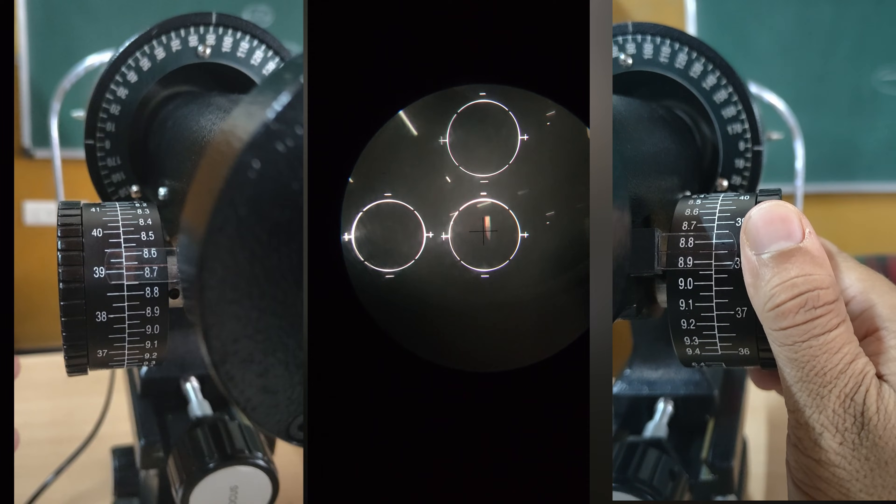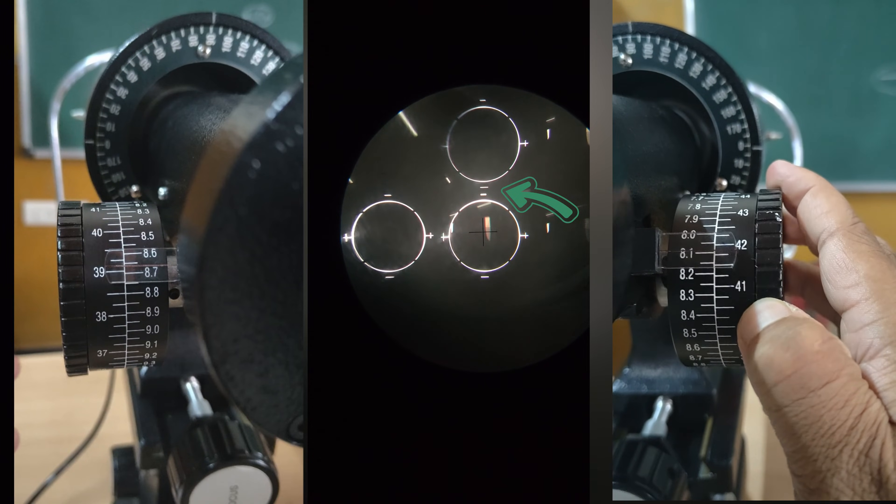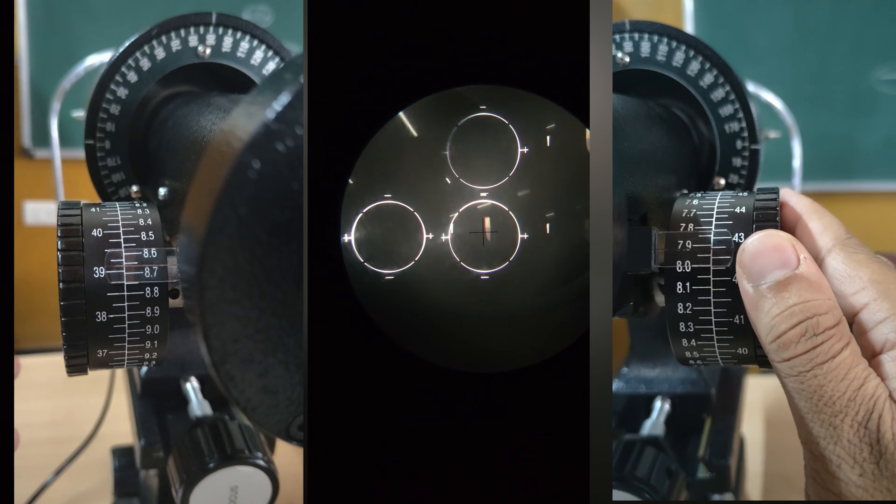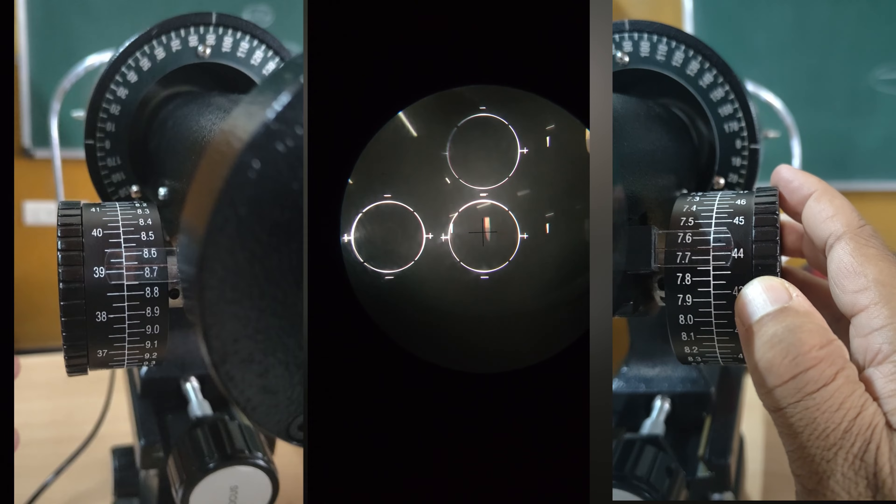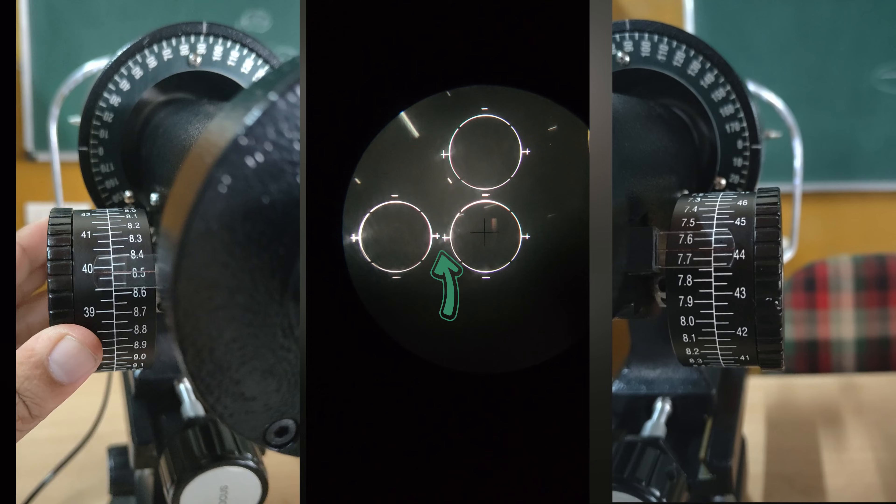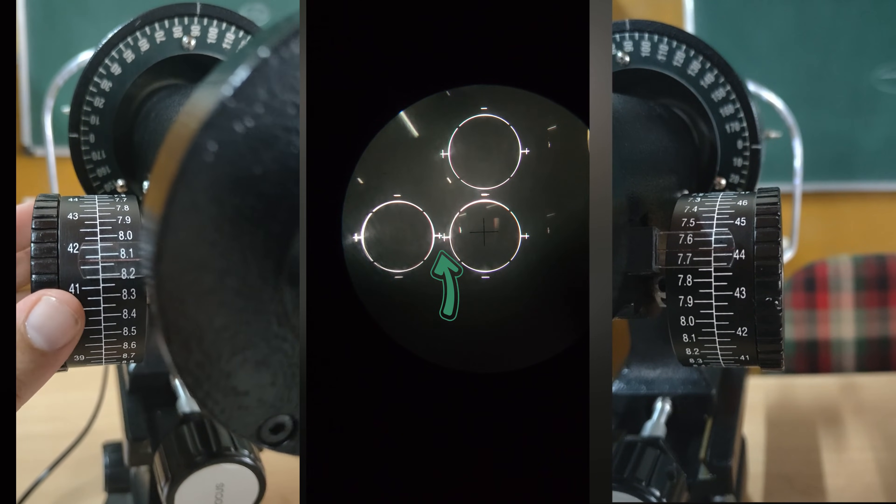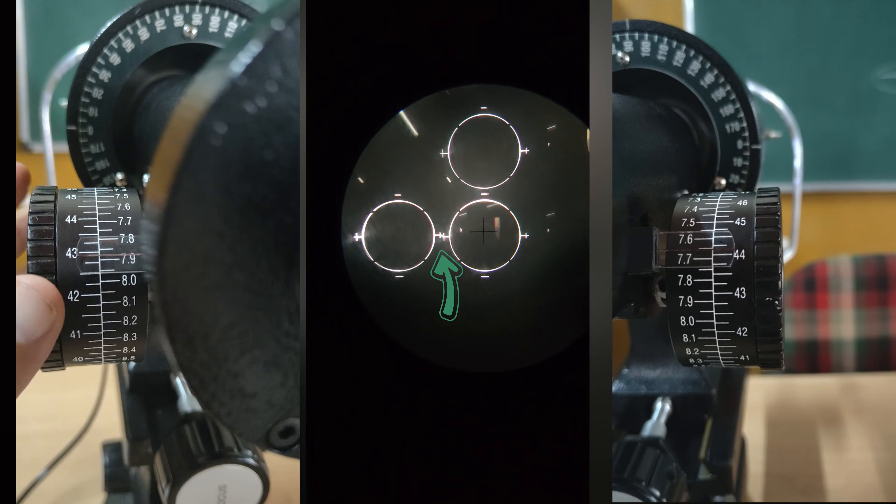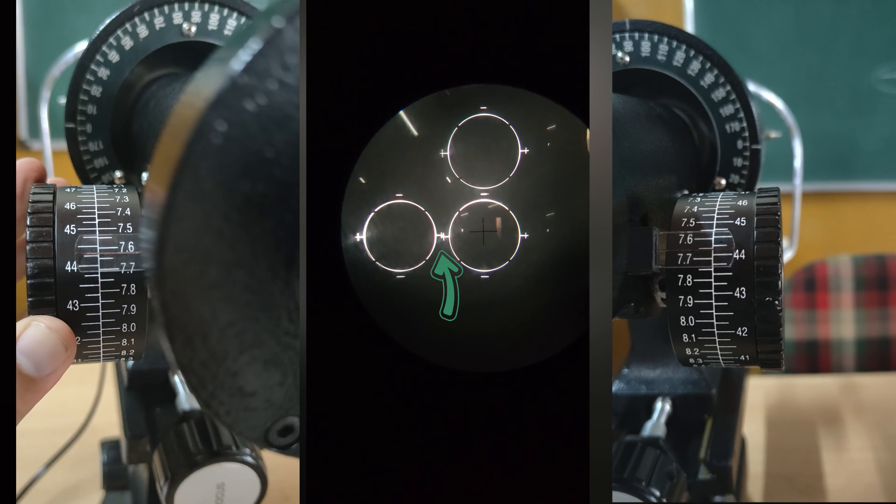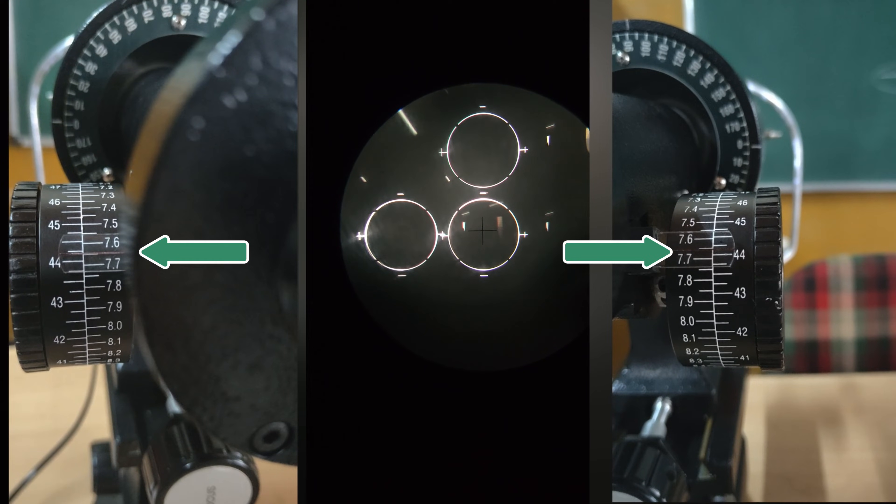Adjust the vertical wheel until the minus signs are overlapping. Adjust the horizontal wheel until the plus signs are overlapping. If it does, it means your instrument is calibrated.